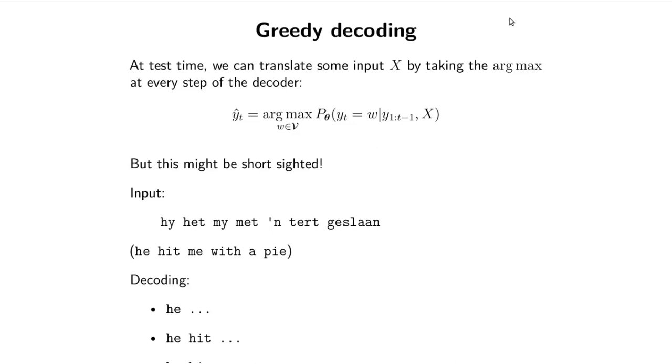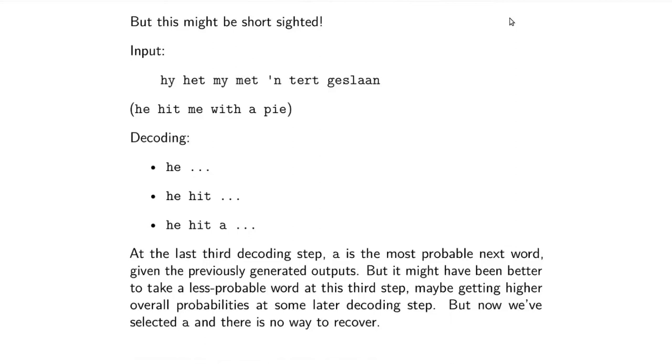So if the sentence - I don't know why this stuff is all so violent - is 'hy het my met 'n tert geslaan', which in Afrikaans is 'he hit me with a pie'. This comes from CS224N at Stanford. Chris Manning has this example about pies and being hit. The input is 'hy het my met 'n tert geslaan'. The ground truth, the desired output is 'he hit me with a pie'.